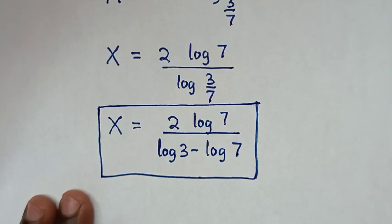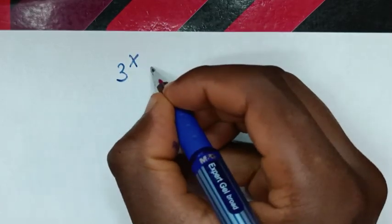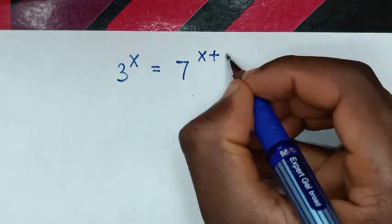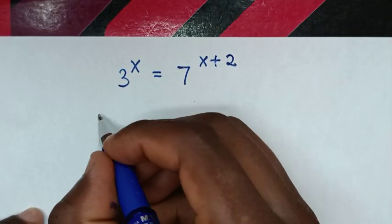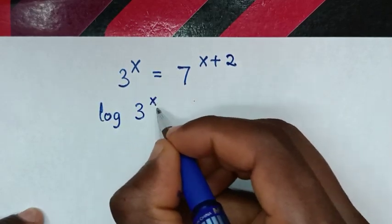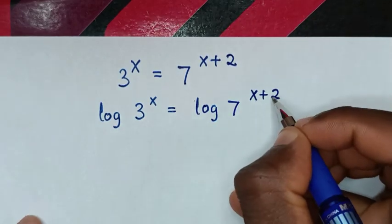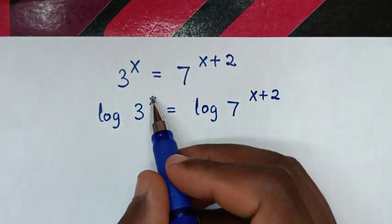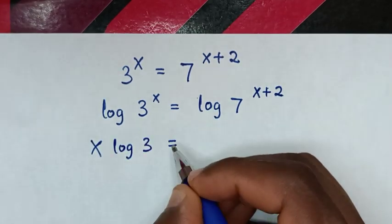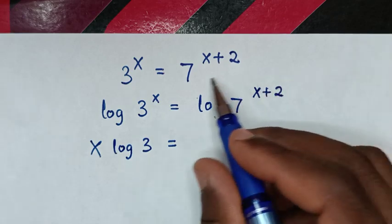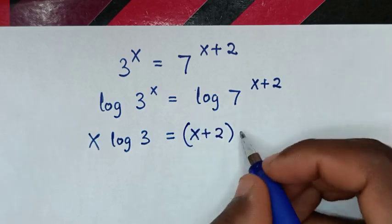Or to solve using another method: from our problem, which is 3 power of x is equal to 7 power of x plus 2, to find the value of x, we apply log on both sides, giving log of 3^x is equal to log of 7^(x+2). Then the power of x will move to the front, so it will be x log of 3 is equal to x log of 7.